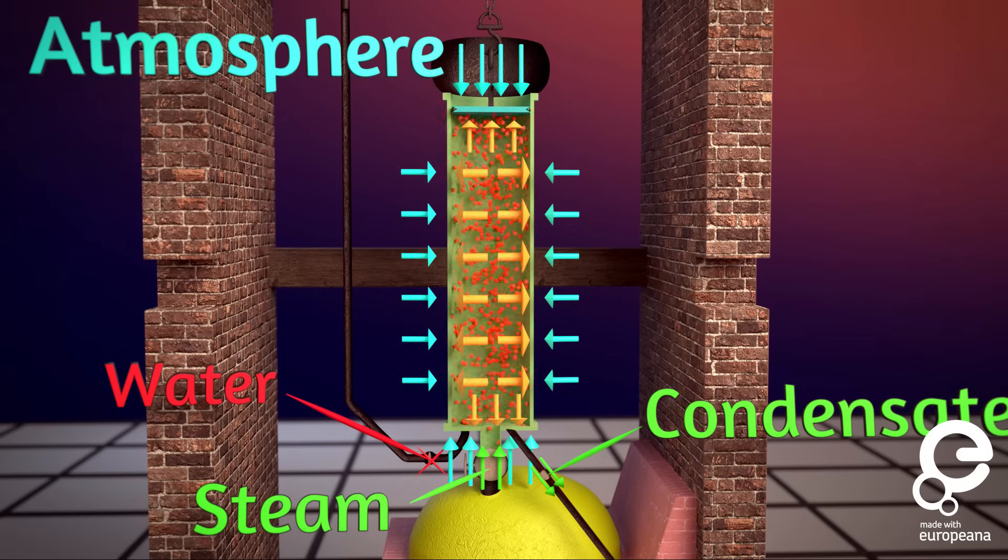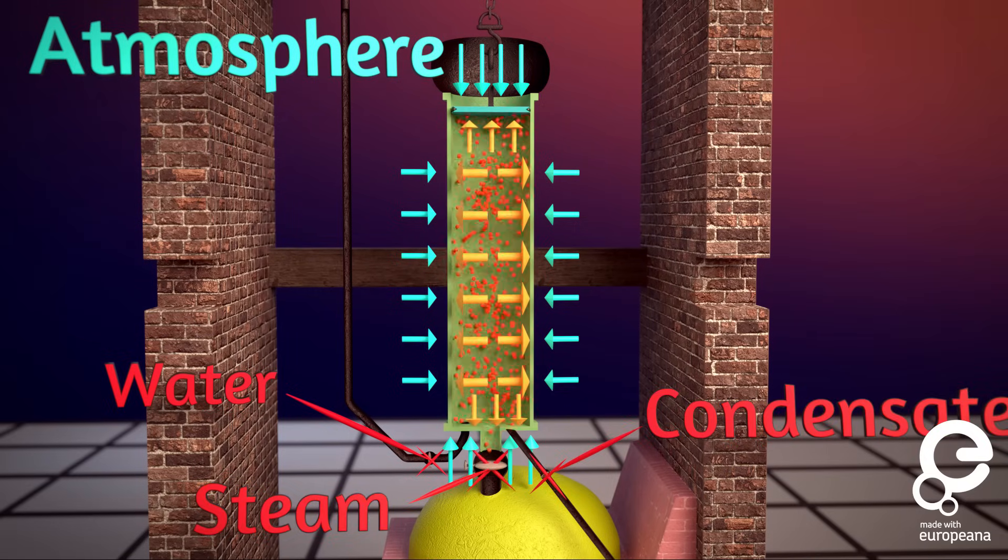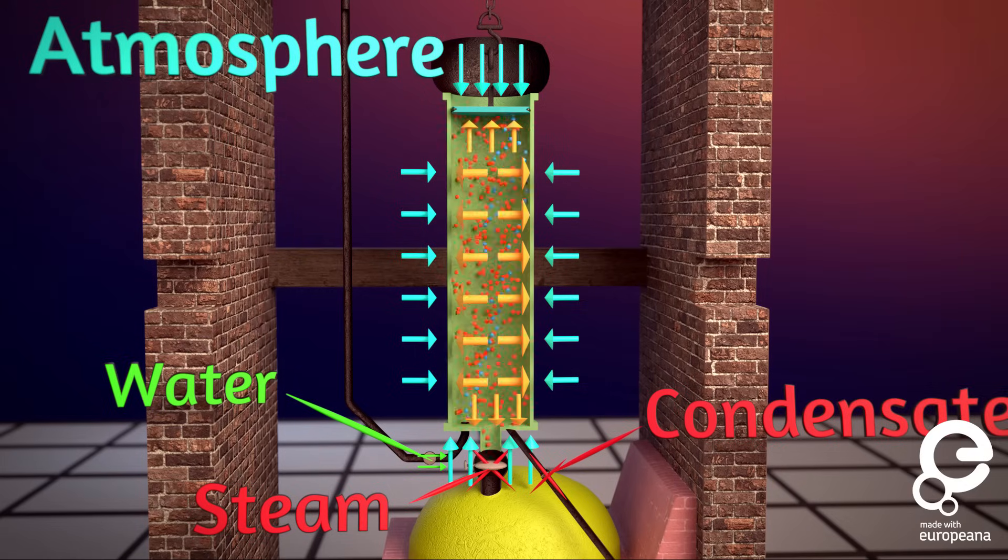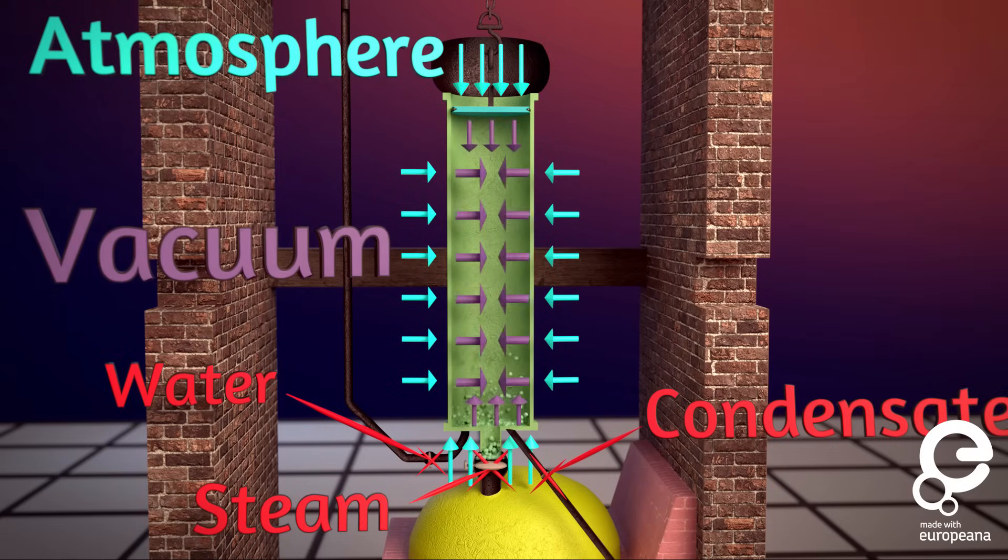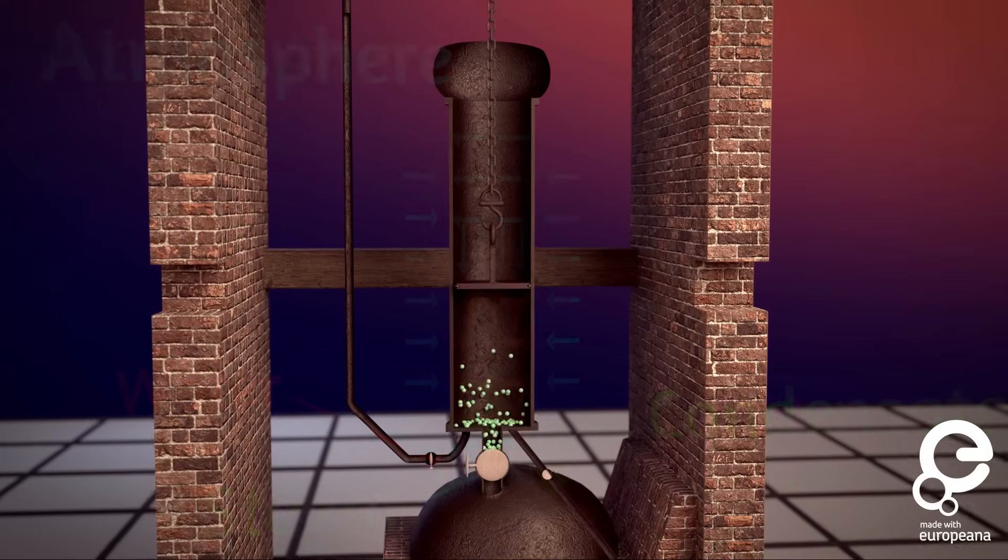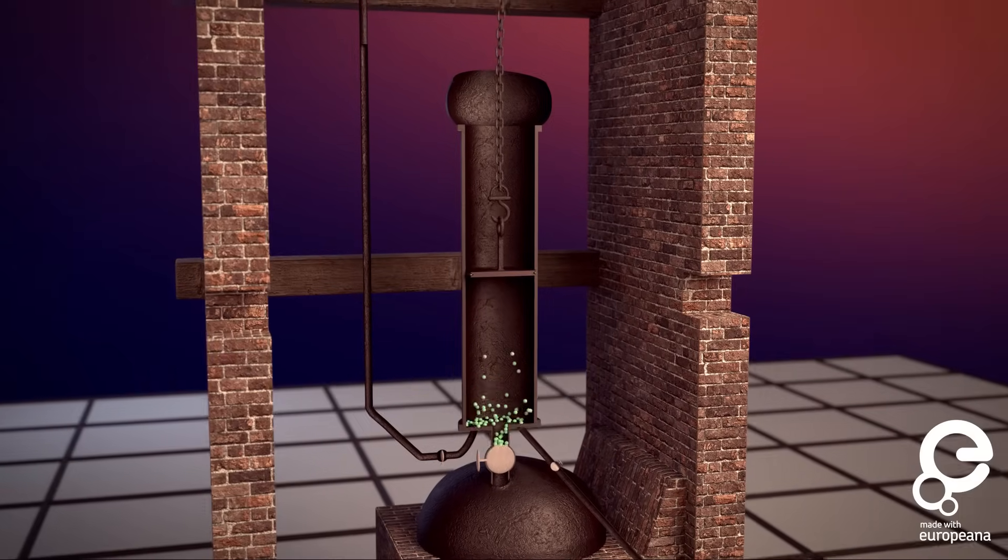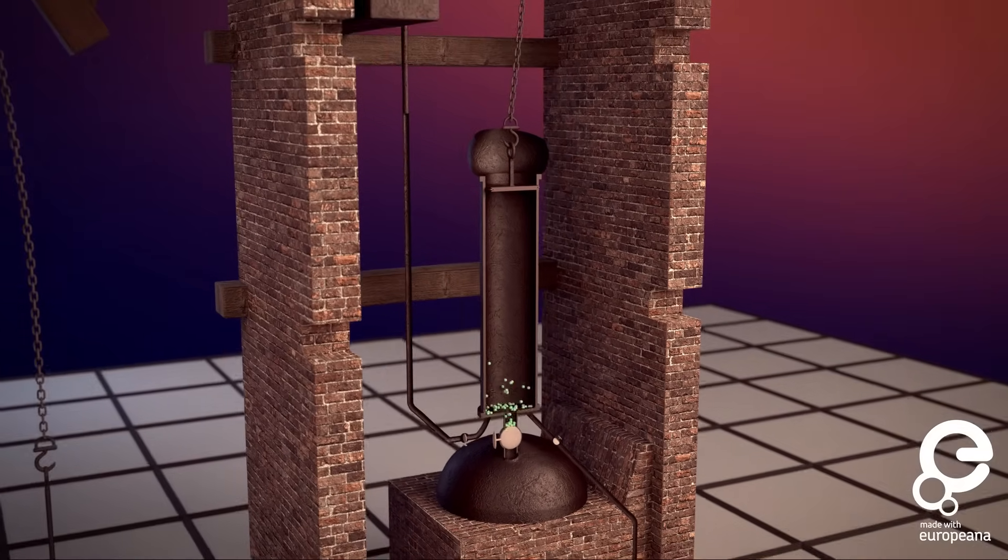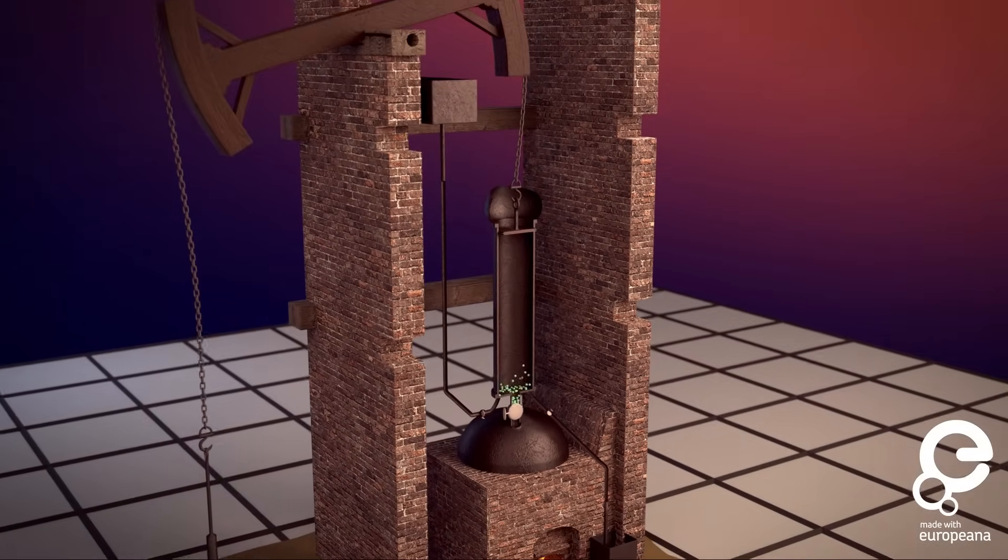When the piston reaches the top, the steam and output valves close. The water valve briefly opens and a spray of water condenses the steam back into liquid, thus creating a vacuum again. The piston is pulled down, the two valves open, the vacuum breaks, steam enters and the liquid leaves out the side. Now the weight from the other side pulls the piston back up, and the steam fills the cylinder.